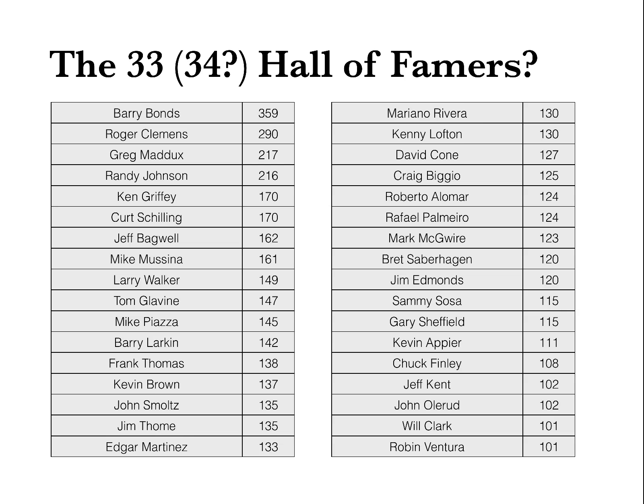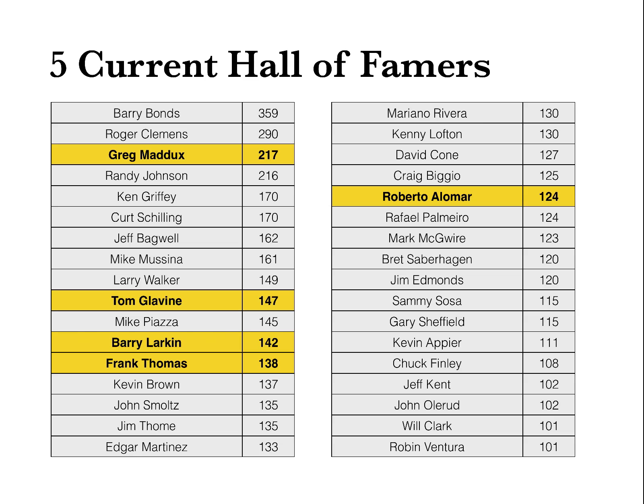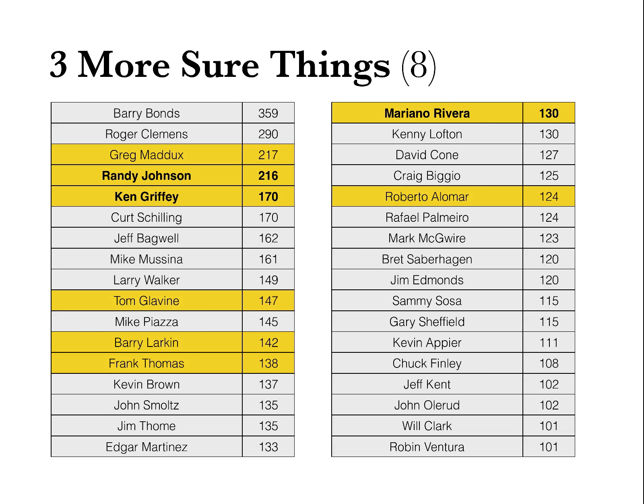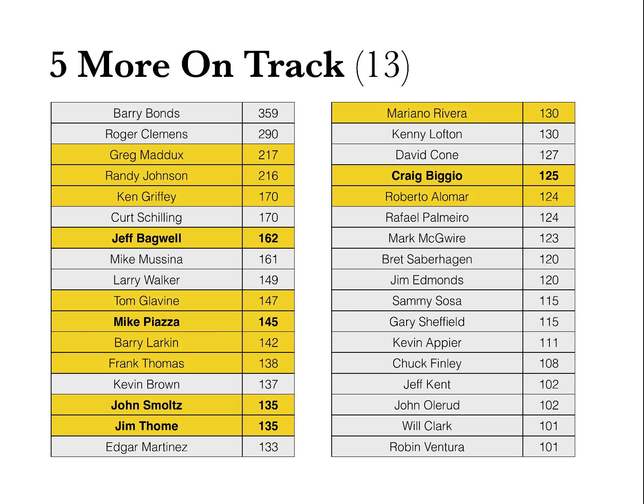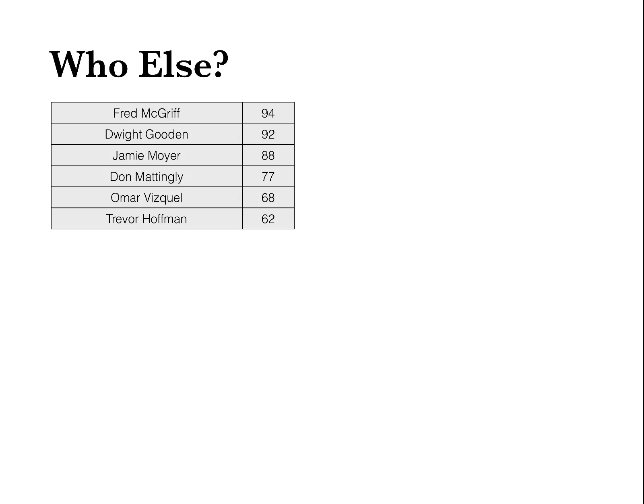So only 5 are actually in the Hall of Fame yet: Maddux, Glavine, Larkin, Thomas, and Alomar. I see about three more sure things: Johnson, Griffey, and Rivera when they hit the ballot. And I see five guys on track to get in without too much issue — Bagwell and Piazza will make it, Smoltz and Tormy might struggle a little bit, and Biggio's going to get in next year. So that still gives us just 13 Hall of Famers. Who else is going to get there? Who doesn't have a 100 Hall Rating that might get in? I don't really see anyone — Trevor Hoffman maybe, but he's got a 62. Don Mattingly, Omar Vizquel — I don't see any of these guys having much of a chance either. So where are all these Hall of Famers going to come from? How are we going to get to our 22 or 33?